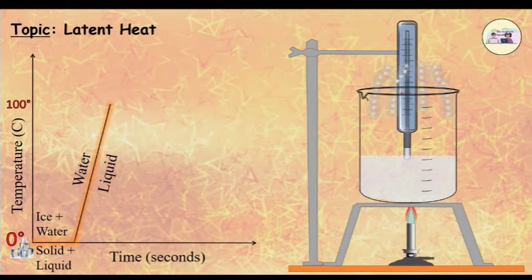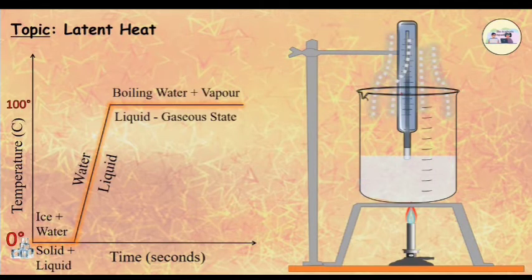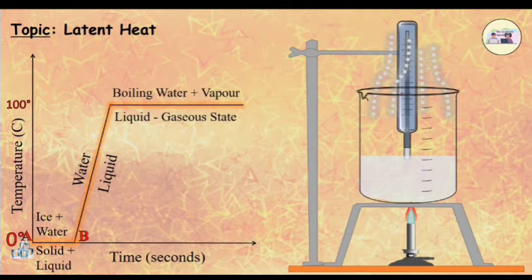At this temperature, water starts converting into steam. The graph of temperature versus time is shown in the figure. In this graph, line AB represents conversion of ice into water at constant temperature.